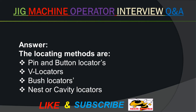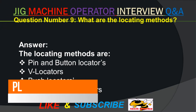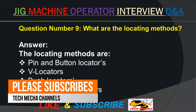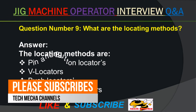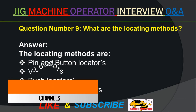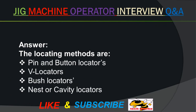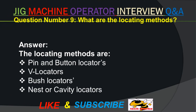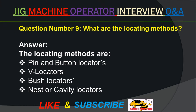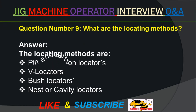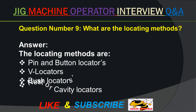Question number nine. What are the locating methods? Answer. The locating methods are: pin and button locators, V-locators, bush locators, and nest or cavity locators.